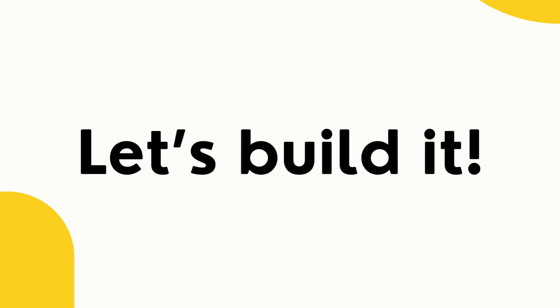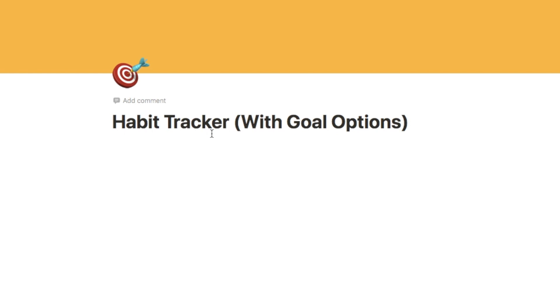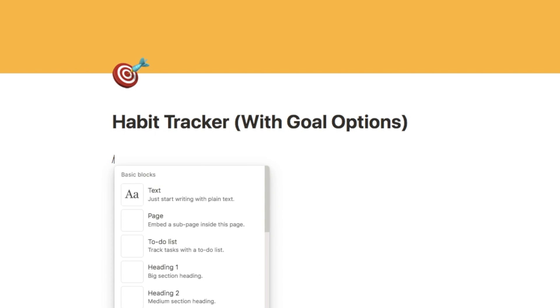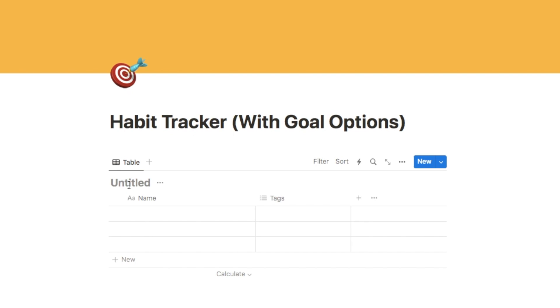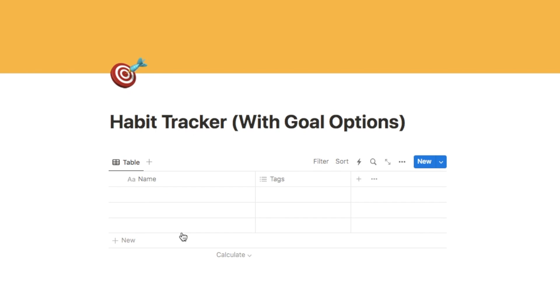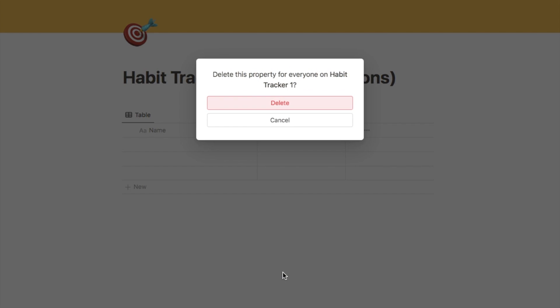Now I'm going to show you step by step how to build this for yourself. I've set up a brand new page, titled 'Habit Tracker with Goal Options' with an emoji and cover photo. The first thing we're going to do is add a brand new database — type in forward slash database and select the database inline option. You can call it whatever you want, I'll call it habit tracker. We're going to hide the database title and delete the tags property because we don't need it.